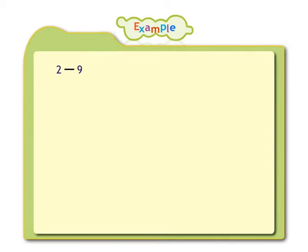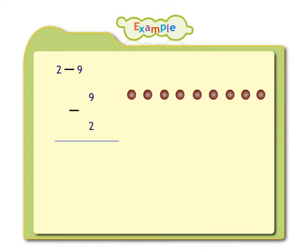For example, if we have to subtract two from nine, write the bigger number nine, draw nine dots beside it, put a minus sign to the left of nine, and write the smaller number two below nine. This is the vertical arrangement. Do not draw any dots beside the number two, but cancel or score out two dots from the nine dots. Now count the remaining dots — there are seven dots. Hence nine minus two equals seven.